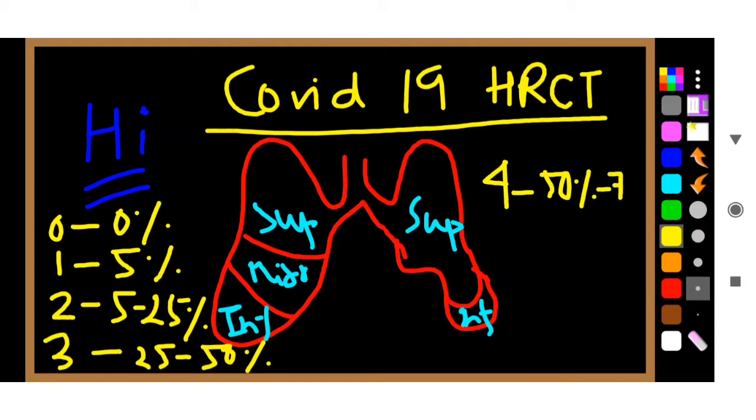3 means 25 to 50 percent is involved. 4 means 50 to 75 is involved. And 5 means greater than 75 percent of the lobe is involved. So I am talking for a particular lobe - how much percentage you can calculate.